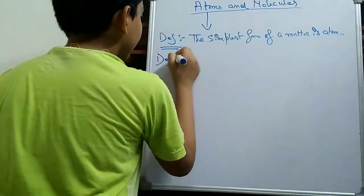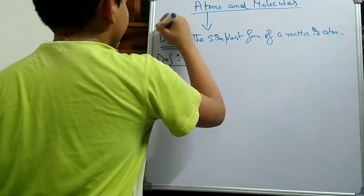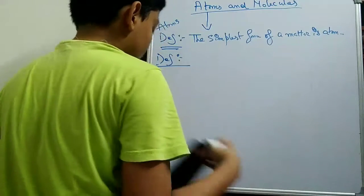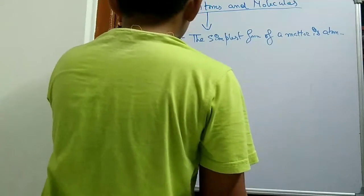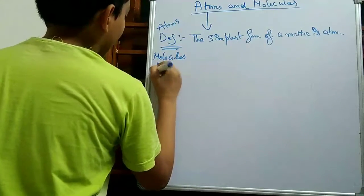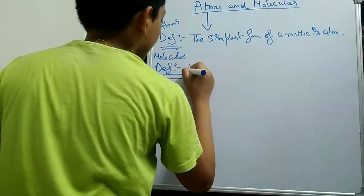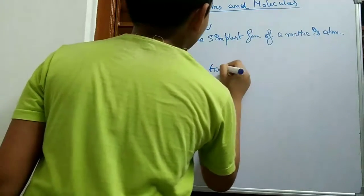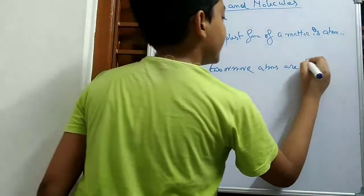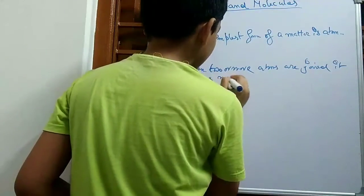Now the definition of molecule. So let us write here — this is atom and this is molecule. Molecules definition: when two or more atoms are joined, it forms molecules.